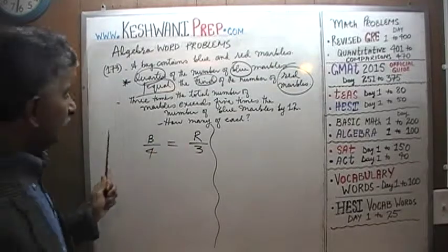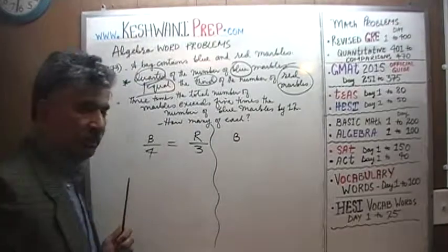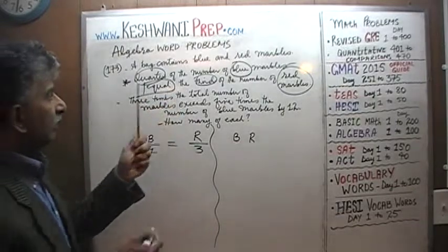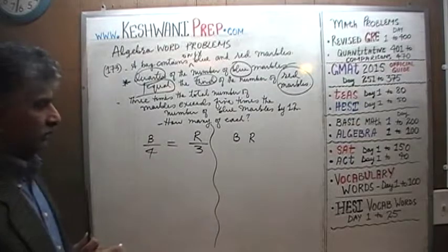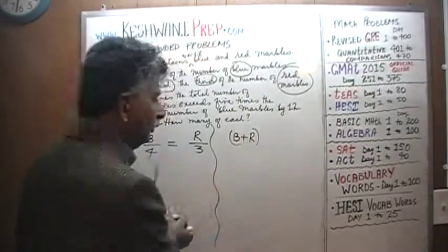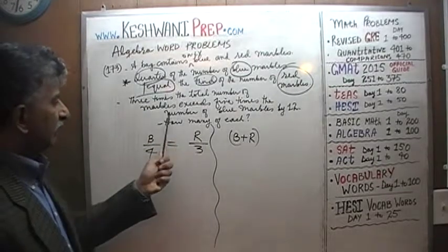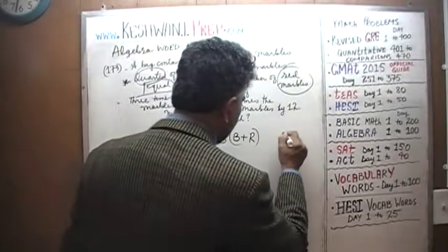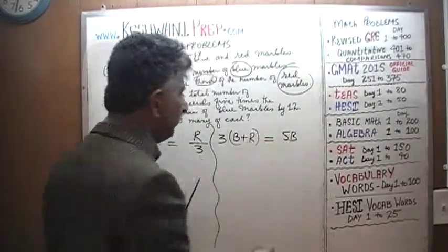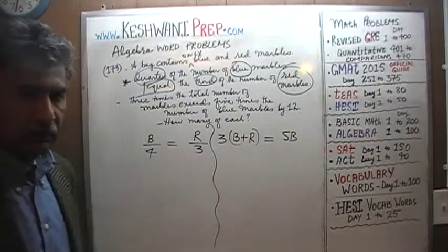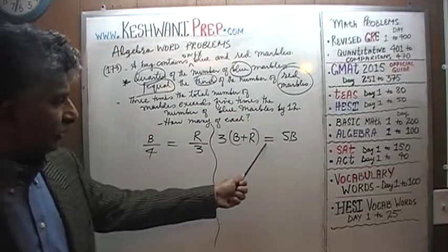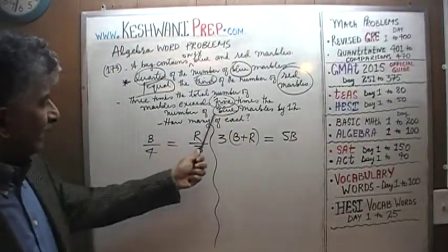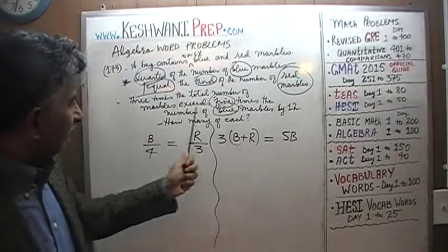Let's do the second equation. Three times the total number of marbles — if we represent blue marbles with B and red marbles with R, and since the bag contains only blue and red marbles, the sum B plus R represents the total. So three times the total is 3(B + R). This must relate to five times the number of blue marbles, which is 5B. But are these two quantities equal to each other? No — three times the total exceeds five times the blue marbles.